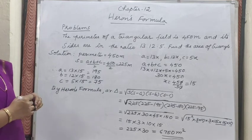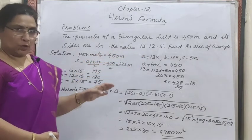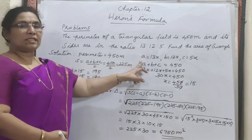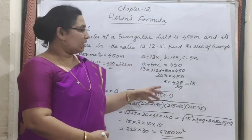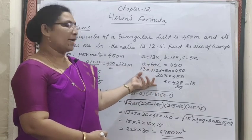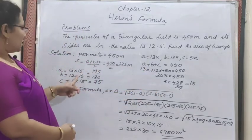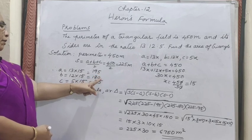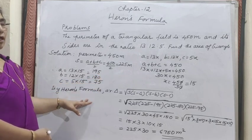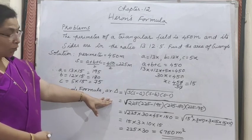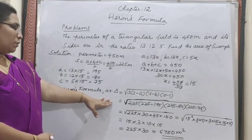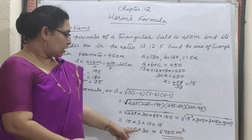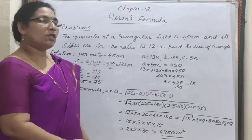Recap of Problem 3: Perimeter = 450 m, sides in ratio 13:12:5. Semi-perimeter = 225. Let A = 13x, B = 12x, C = 5x. Solving gives x = 15, so the sides are 195, 180, and 75 m. By Heron's formula: area = √(225×30×45×150). Make pairs and take out the square root — the answer is 6750 m².